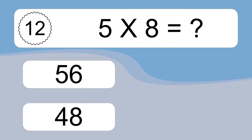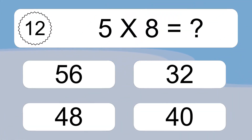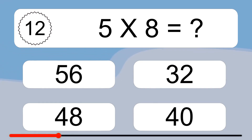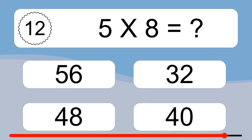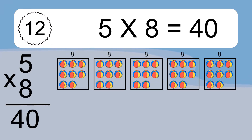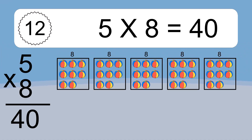5 times 8 equals what? 5 times 8 equals 40. We have 5 boxes, and each box has 8 colorful balls inside. If you count all the balls in all the boxes together, you will have 5 times 8 balls. This equals 40 balls.